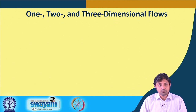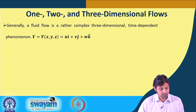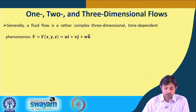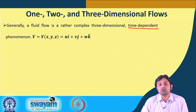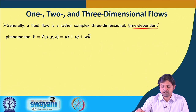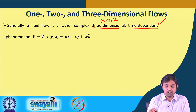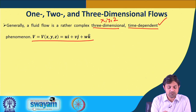Now talking about 1, 2, and 3-dimensional flows. Generally, a fluid flow is a complex, 3-dimensional, and time-dependent phenomenon. Any fluid flow in real life has all three characteristics. The velocity will be a function of time, and 3-dimensional means it will have x, y, and z velocity components, as indicated by V(x, y, z, t) = u·i + v·j + w·k.